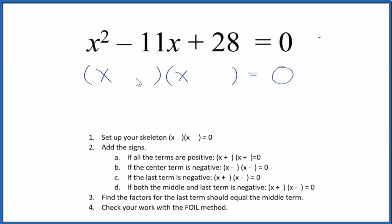All right, let's factor the equation x squared minus 11x plus 28 equals zero. So we start with a skeleton equation. This is our skeleton equation here, and then we're going to add the signs into the skeleton equation.